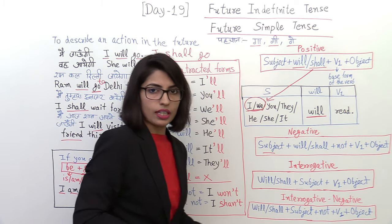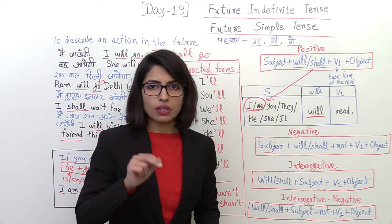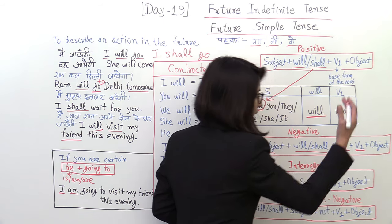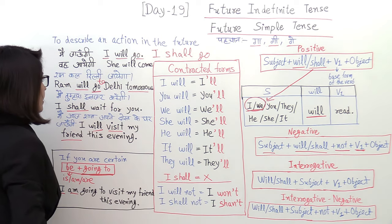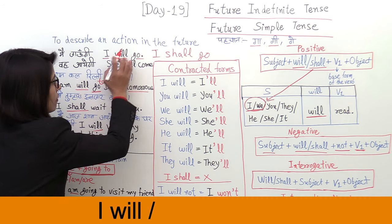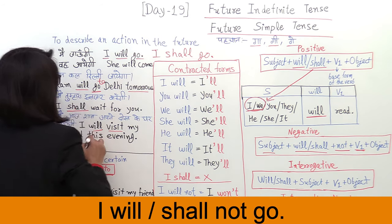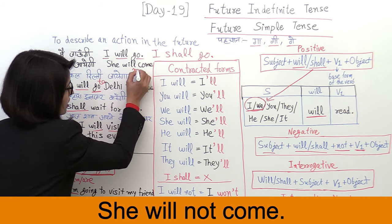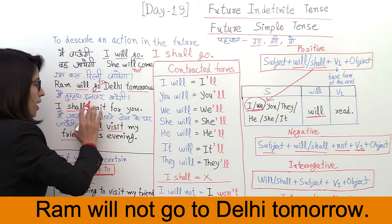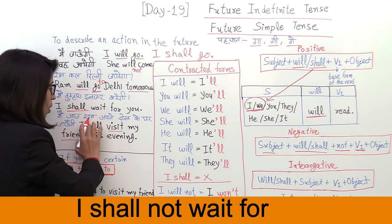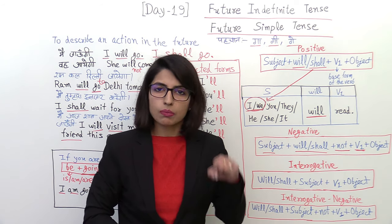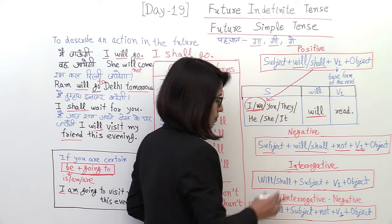Now let's see the negative structure. The negative structure is: subject, then will or shall, then not comes between the helping word and main word, then the verb. I will not go. I shall not go. She will not come. Ram will not go to Delhi tomorrow. I shall not wait for you. It's very easy, guys.